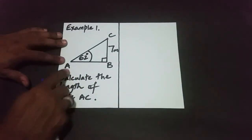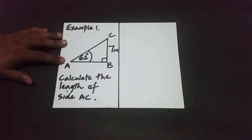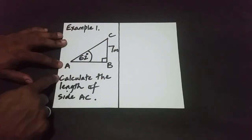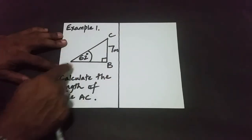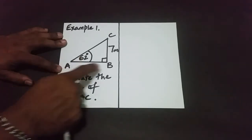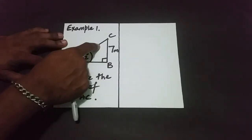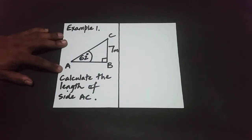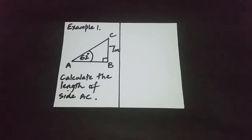In example one, you can clearly see a right-angled triangle. I'm restating that trig rules can be applied to all triangles. This triangle is called triangle ABC where the capital letters at vertices represent angles: angle A is 62 degrees, angle B is 90 degrees. The question asks us to calculate the length of side AC. We're going to apply the sine rule.